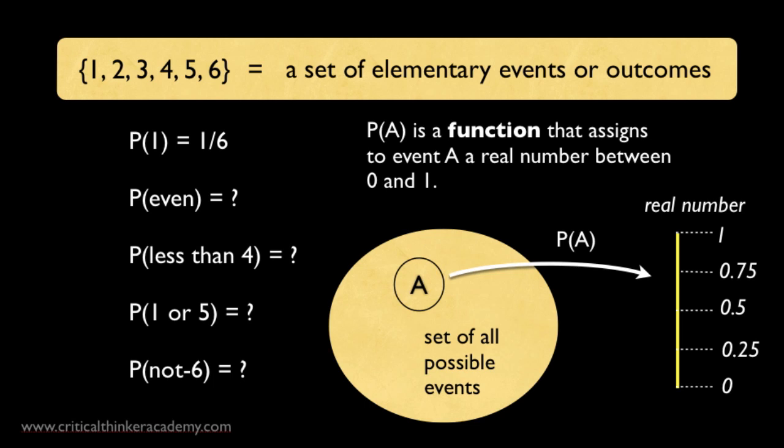So the odds of rolling a 1 are just 1 in 6, which is about 0.17. The odds of rolling an even number is just 1 half, or 0.5, because the even numbers include 2, 4, and 6, which make up half of all the possible outcomes.